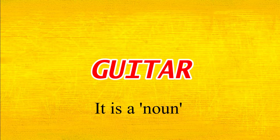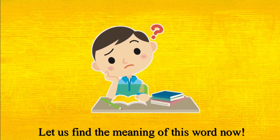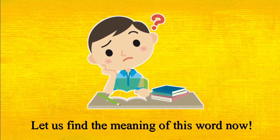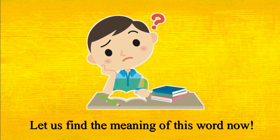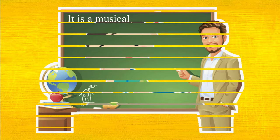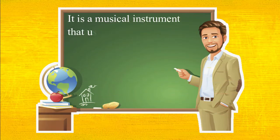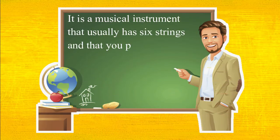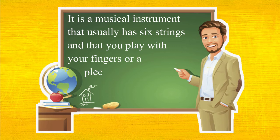Guitar. It is a noun. Let us find the meaning of this word now. It is a musical instrument that usually has six strings and that you play with your fingers or a plectrum.